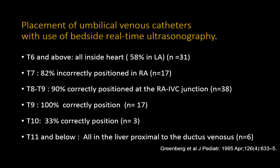The first comparison of umbilical venous catheter tip position with X-ray was by Greenberg et al. in 1995. They found that around T9, nearly 100% of tips were in the correct position, though only 17 babies were studied. Between T8 and T9, about 90% were correctly positioned at the right atrial-IVC junction.